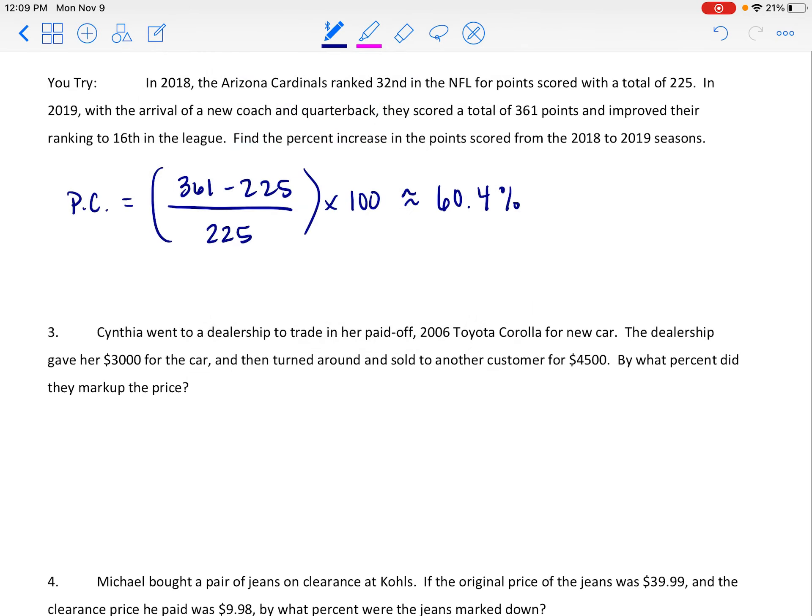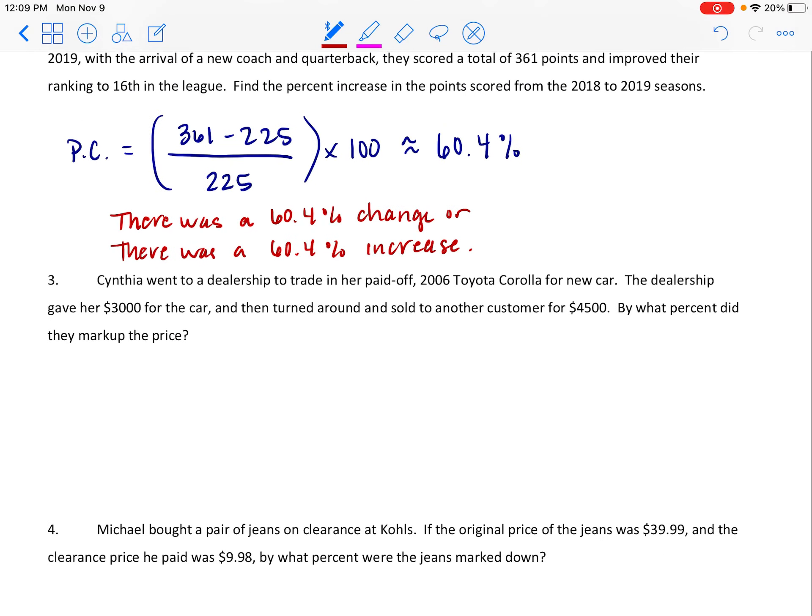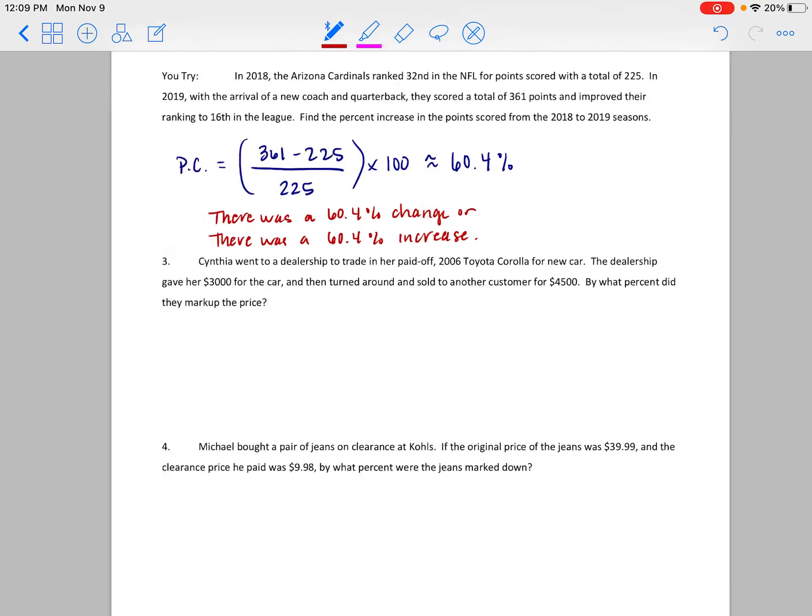We have two ways we can say this. We can say there was a 60.4 percent change, or we could say there was a 60.4 percent increase. Again, a double positive doesn't change anything. So just saying it's a change or an increase would be okay there. So a 60 percent increase is good. They got the 225 plus an extra 60 percent. That's not bad.